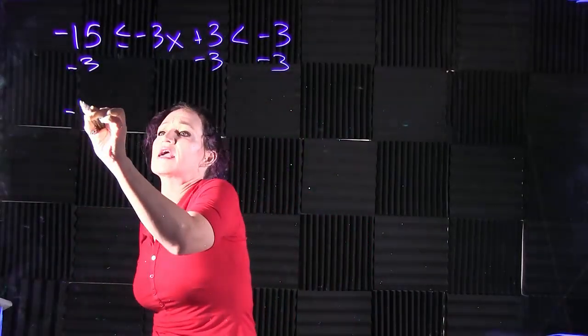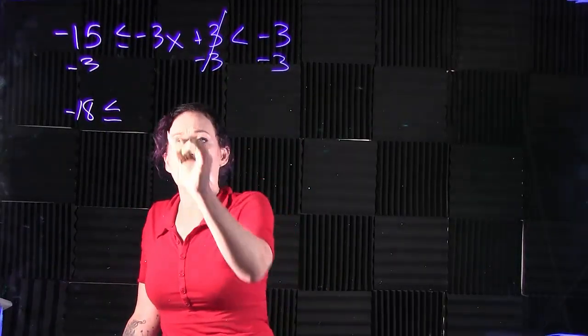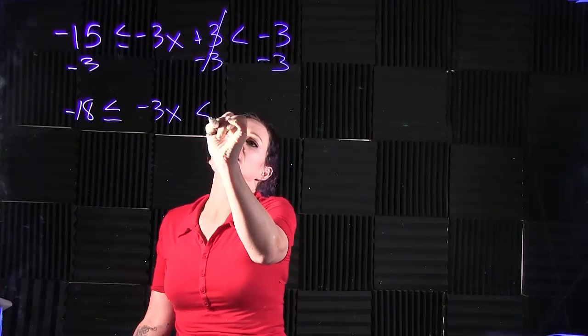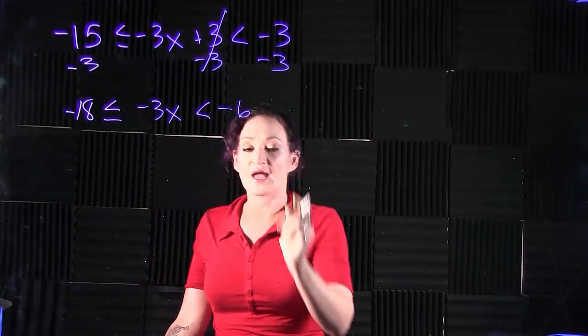On the left side we get a negative 18. Drop down your symbol. 3 minus 3 cancels, so we're going to drop down that negative 3x. Drop down our second symbol, and negative 3 minus 3 is a negative 6.